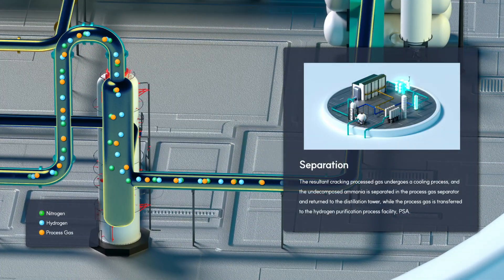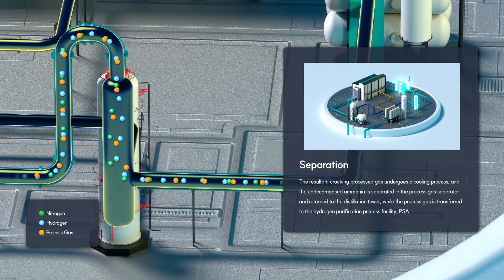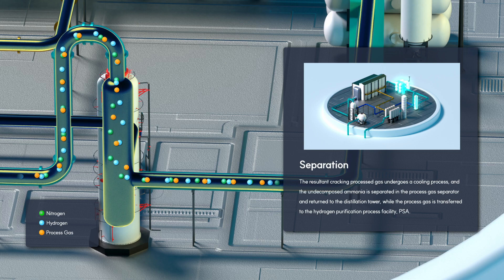The resultant cracking process gas undergoes a cooling process, and the undecomposed ammonia is separated in the process gas separator and returned to the distillation tower, while the process gas is transferred to the hydrogen purification process facility, PSA.